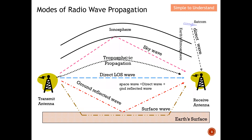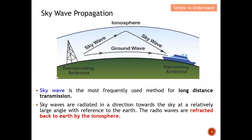This diagram was shown in the Part 1 series discussion on the modes of radio wave propagation. In Part 1, I concentrated on the surface wave; for this Part 2 series I'm going to concentrate on the sky wave. You can see that the electromagnetic wave is aimed towards the sky, and with the help of the ionosphere it is reflected back and finally received by the receiving antenna at the earth.